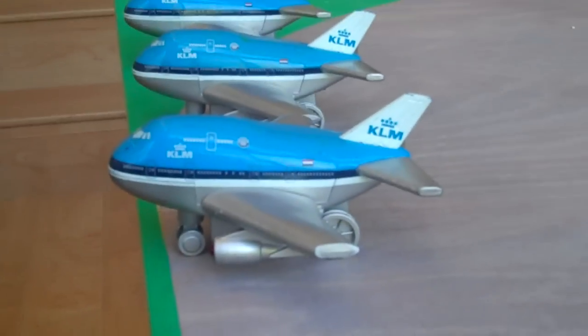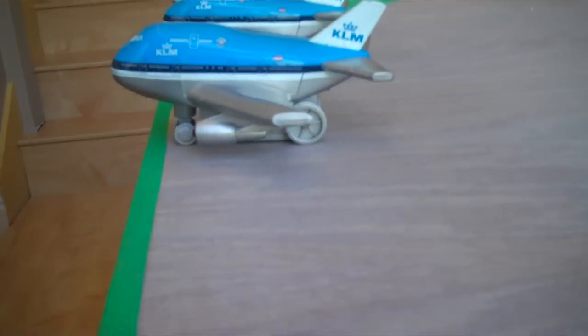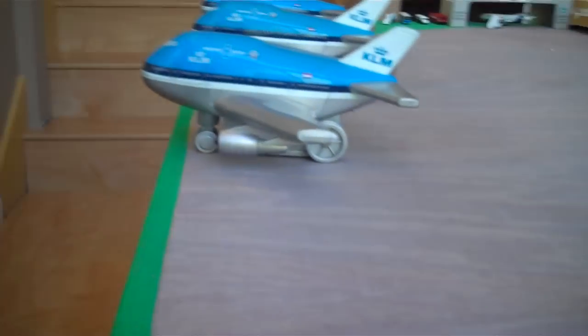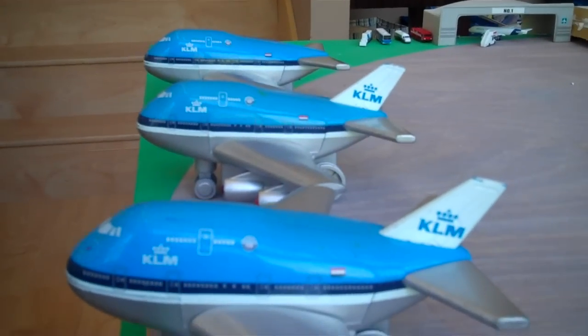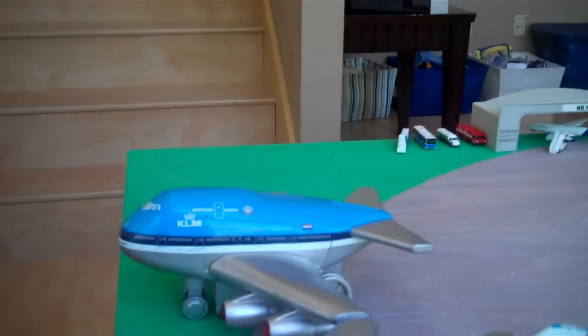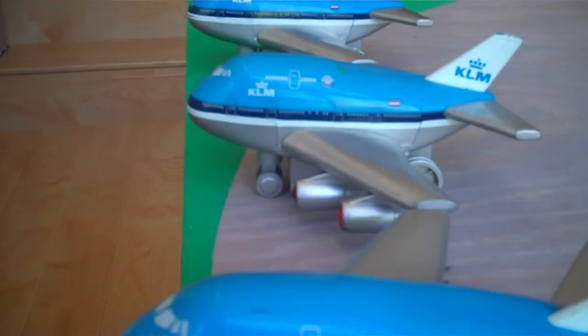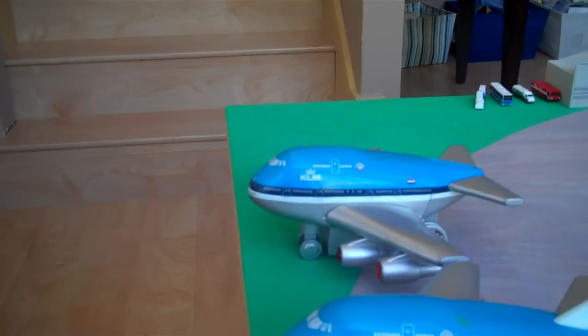Over here, we have a KLM 747. The first one here. It's a KLM 747 at gate 25 just arrived from Amsterdam. After it is a KLM 747 at gate 24 that just arrived from Papeete. And then a KLM, actually my bad. This one's from Amsterdam. This one's from LAX. And that one is from Papeete. They're all 747s.